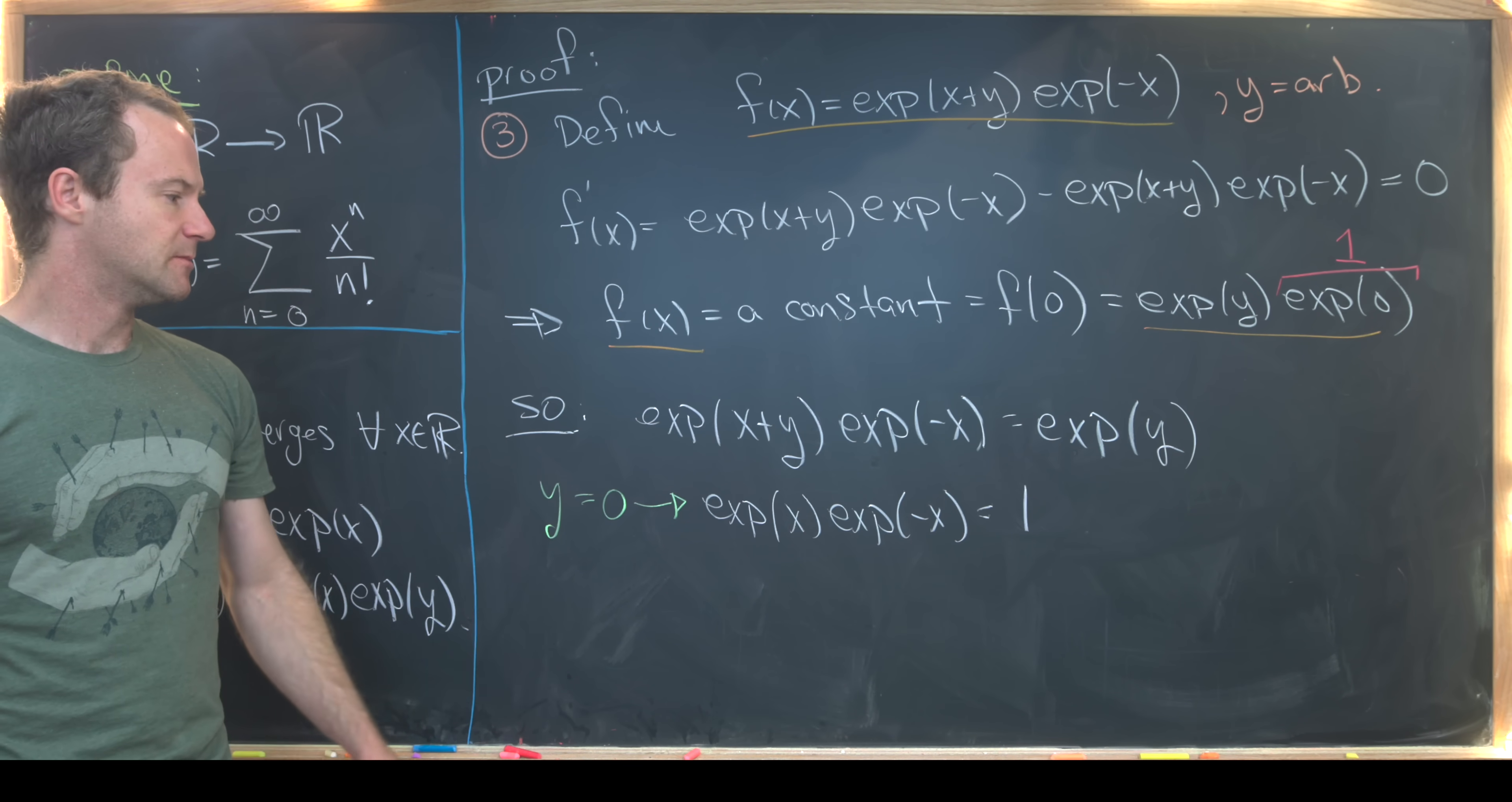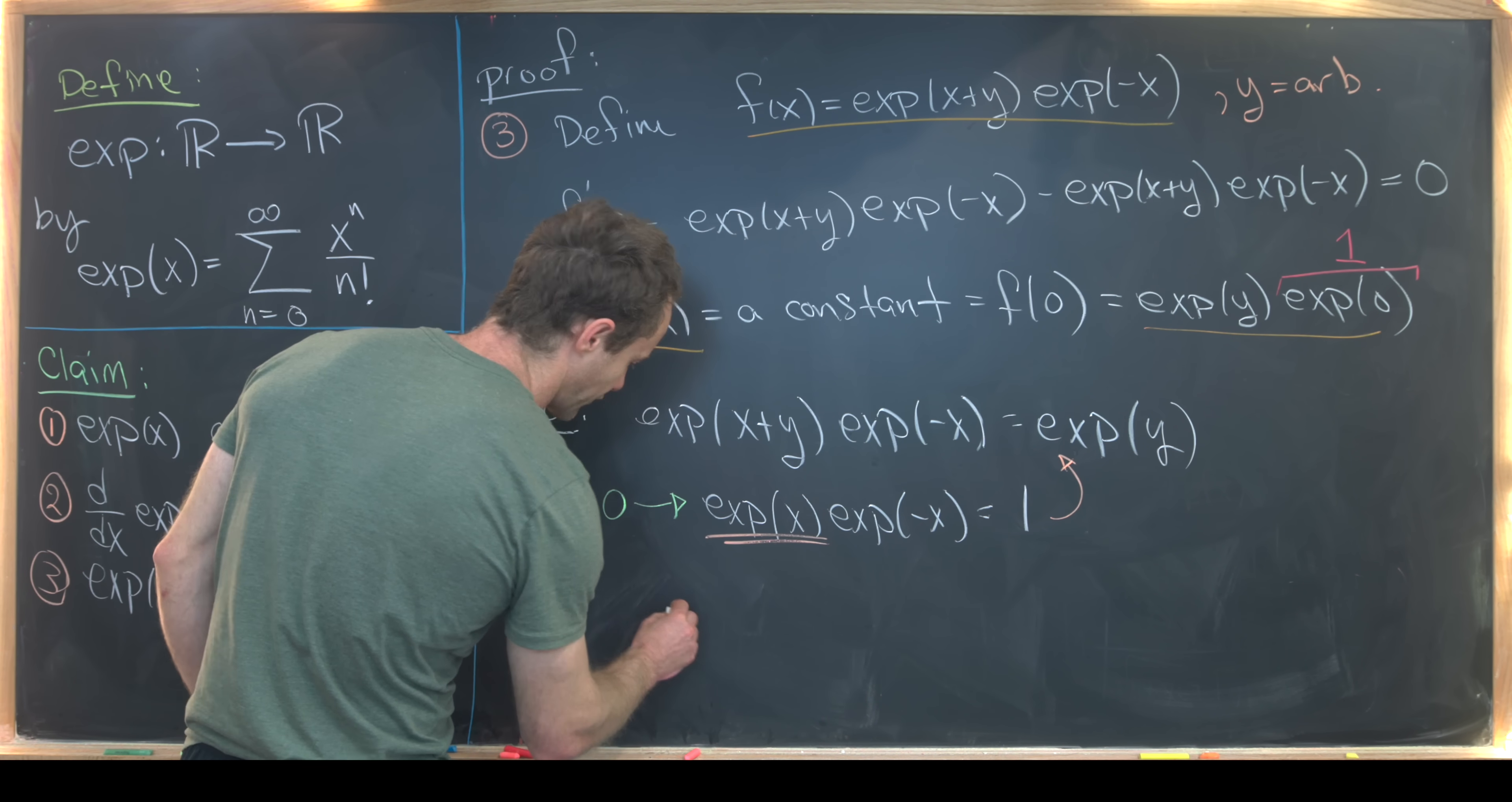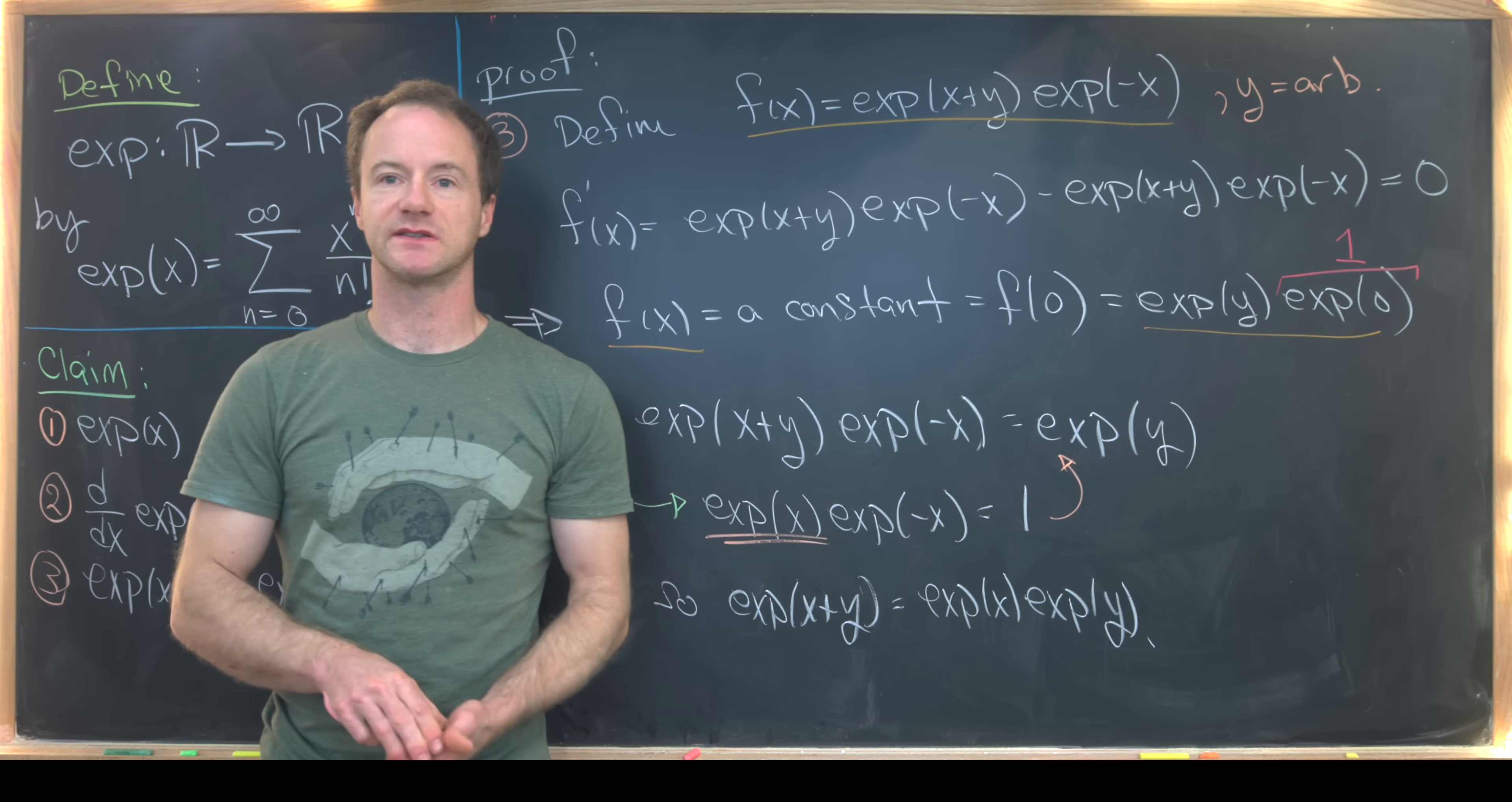But that tells us that we can take this equation right here and multiply both sides by exp(x). So over on the left hand side, it'll cancel this thing. And on the right hand side, we'll be left with that product. So we've got exp(x+y) equals exp(x) times exp(y), which is exactly what we wanted to end up with. And that's a good place to stop.